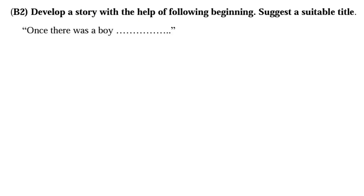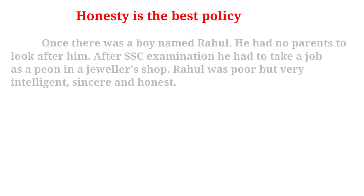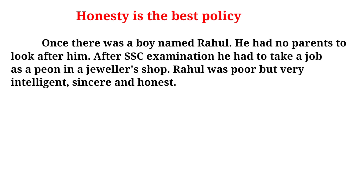Now the second type of question will be like this: 'Develop a story with the help of the following beginning. Suggest a suitable title.' Here you write the title first and then develop the story based on the beginning provided. The title is 'Honesty is the Best Policy,' and the beginning is: 'Once there was a boy named Rahul.'